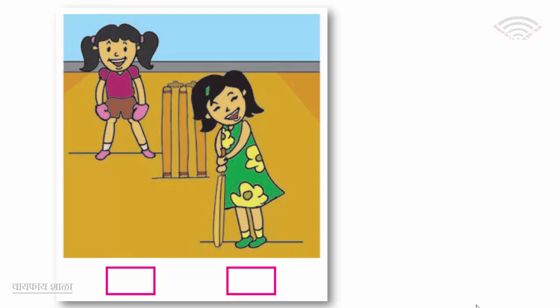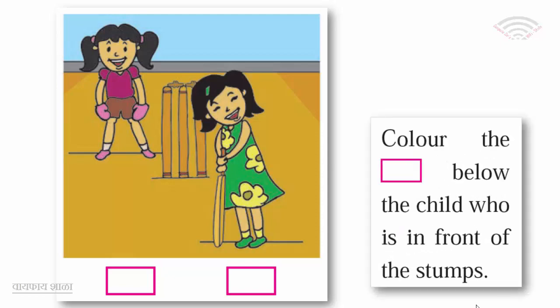Look at the picture and color the box below the child who is in front of the stems.